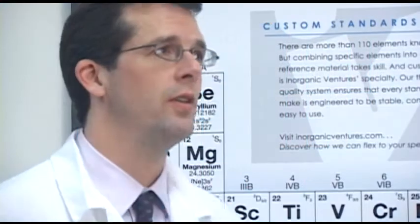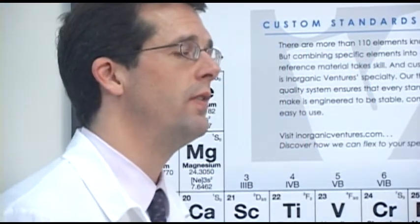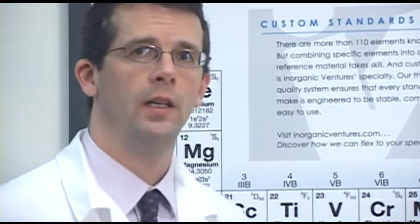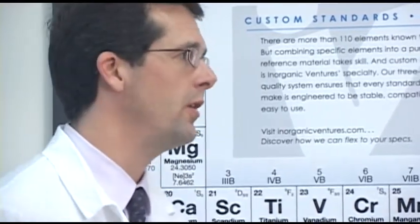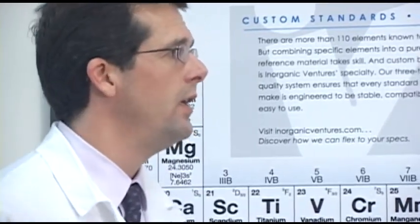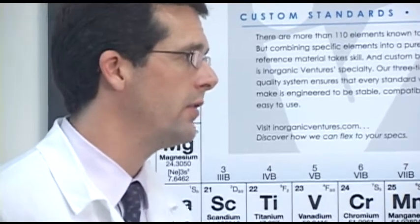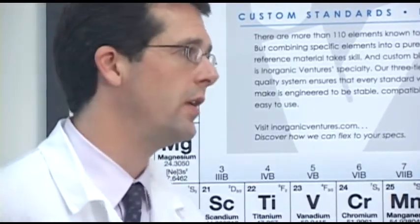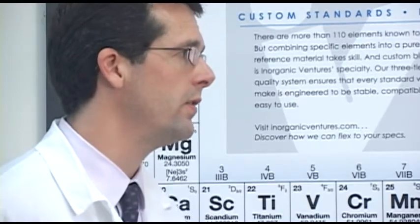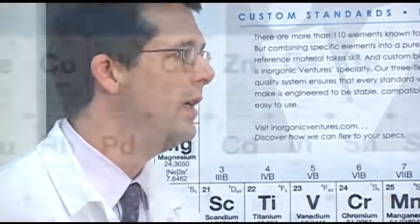As a result, you can typically do very low level measurements of elements such as arsenic, which would be suffering from an Ar40-Cl35 interference, or selenium, which suffers from a number of argon chloride interferences as well.